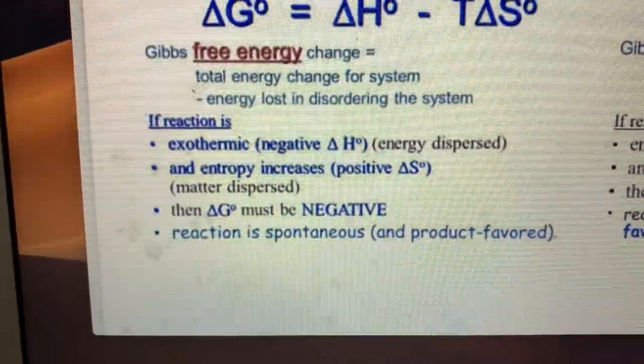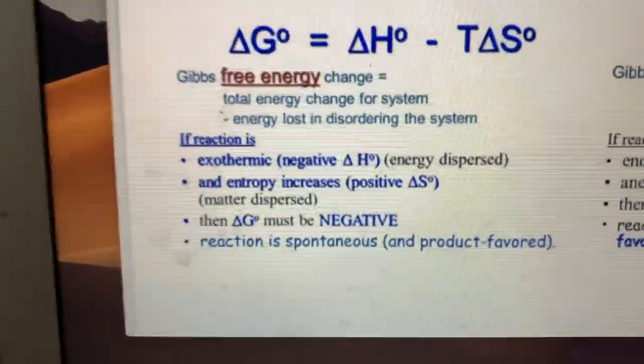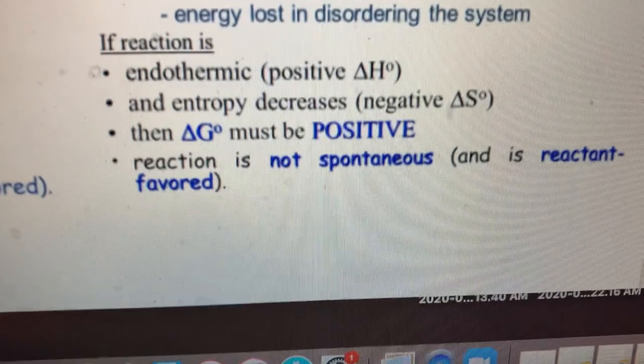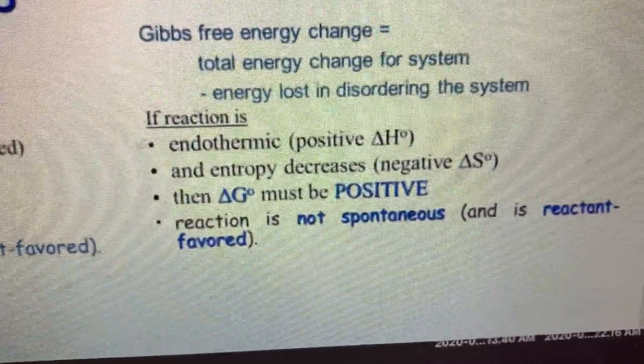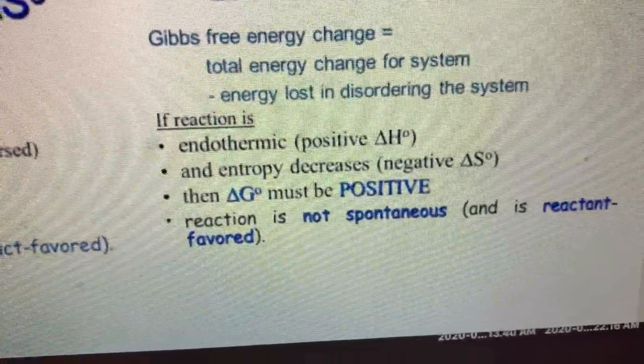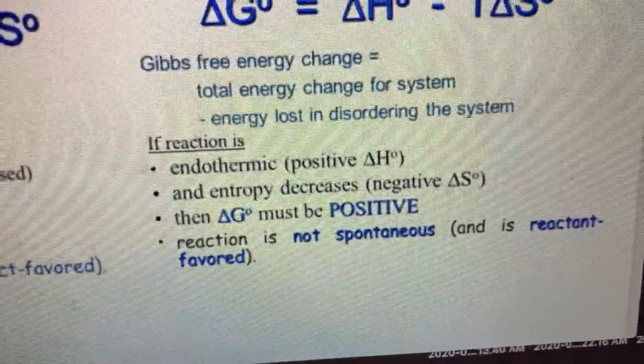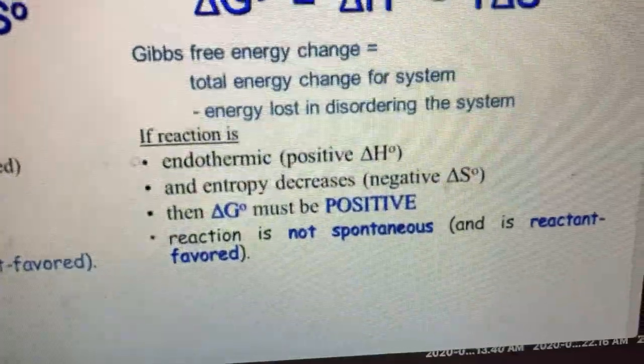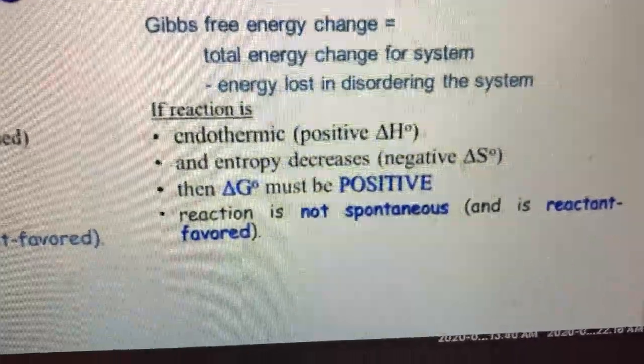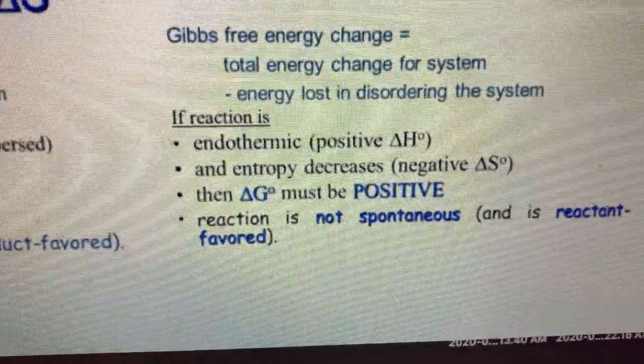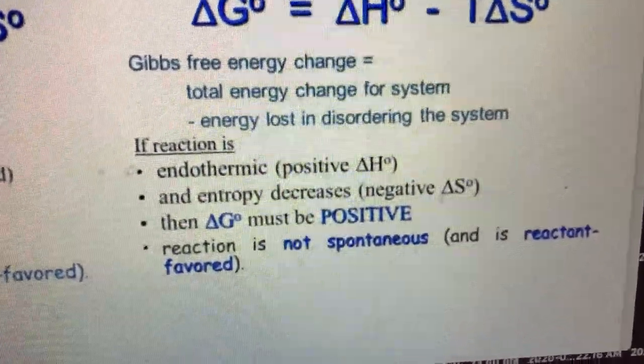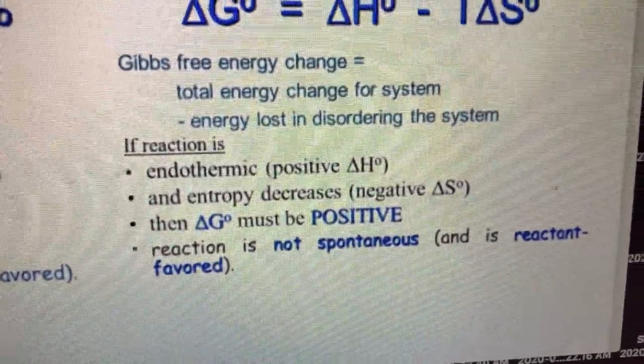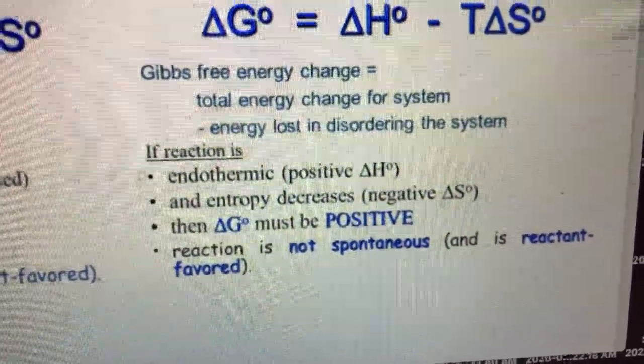On the other side of that, if the reaction is endothermic with a positive delta H and entropy decreases, it becomes more ordered which means a negative delta S. Then your delta G, your Gibbs free energy, will always be positive. That means the reaction is not spontaneous and we say it's reactant favored because it's going to stay at reactants unless an outside force works upon it.